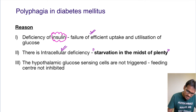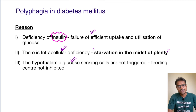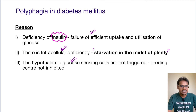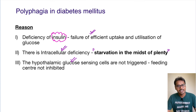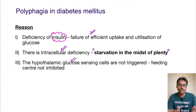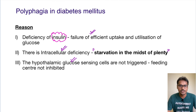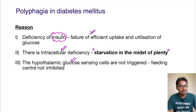Finally, the hypothalamus glucose-sensing cells are not being triggered. The feeding center is not inhibited because glucose has not entered into the cell. The hypothalamus thinks that there is non-availability of glucose and it causes polyphagia, increasing the feeding of the person.